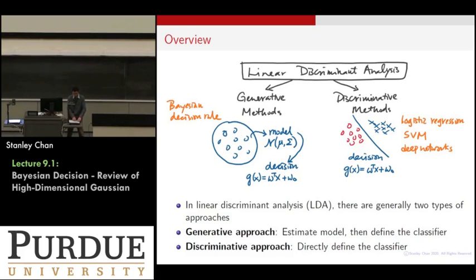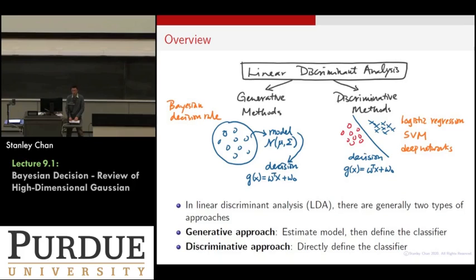In the generative approach, you will look at the data points and come up with a model — for example, a Gaussian model. You will learn the parameters of that model and then make decisions based on it. It's called generative because you are generating the data from a certain model. The discriminative approach does not need to know the underlying model parameters. Instead, you directly find a classifier that separates the two classes of data points.